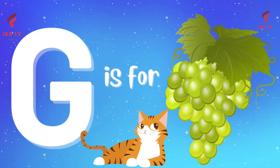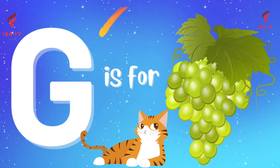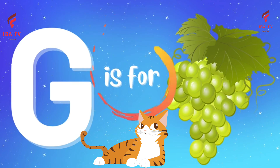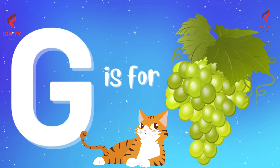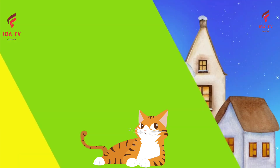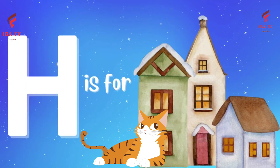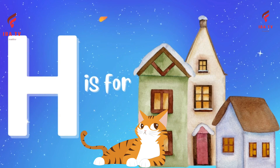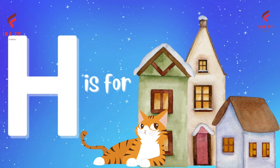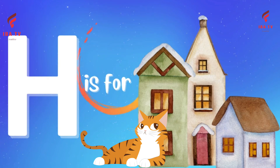G, G is for Grape. Grape means Angu. H, H is for House. House means Girls.